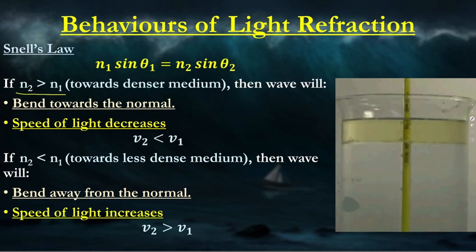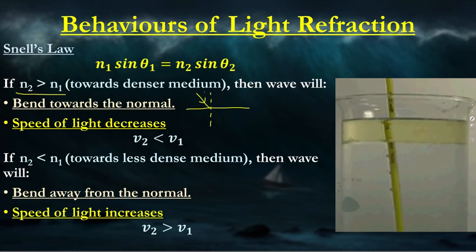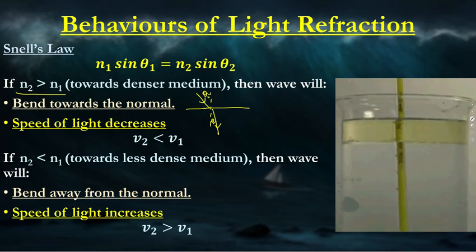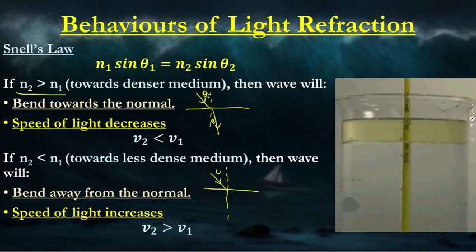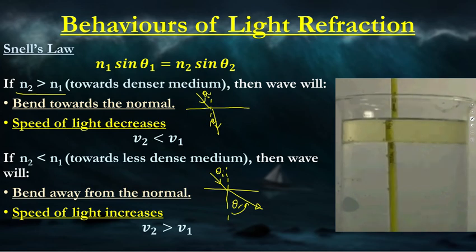If N2 is bigger than N1 — that is, you're going into a denser medium — the wave will bend towards the normal, and the speed of light decreases. If you're going from a denser medium to a less dense medium, the light will bend away from the normal because there is an increase in speed. You can see this with the pencil going through water, oil, and then air — as it reaches the normal line there is no refraction when the angle of incidence is 90 degrees.